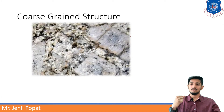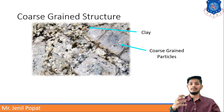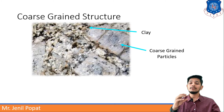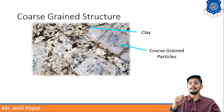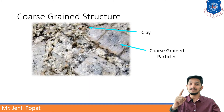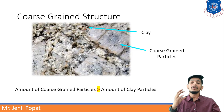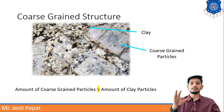Coarse grained structure. Here you can see a soil structure in which clay and coarse grained particles both are there, but most of the amount is coarse grained particles, and in between them there are clay particles. You can see a larger amount of coarse grained particles with clay particles in between them. When the amount of coarse grained particles is greater than the amount of clay particles, it is always coarse grained structure.